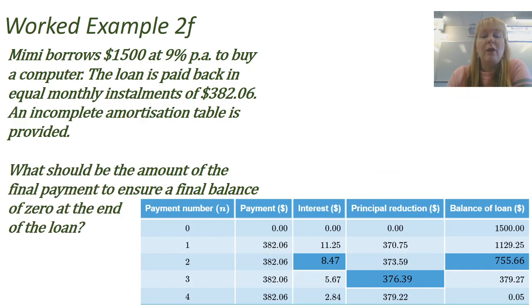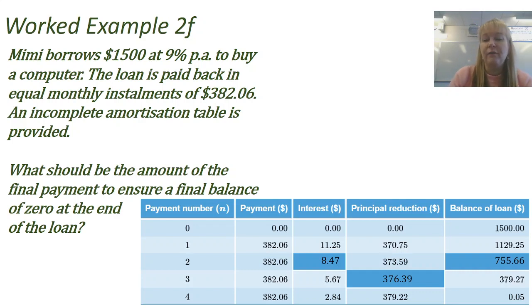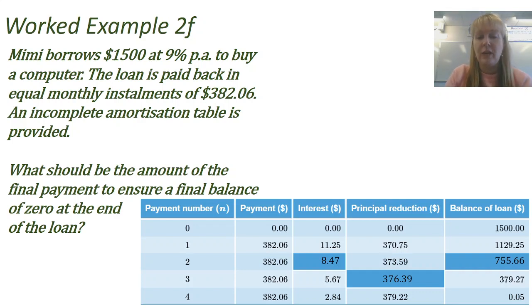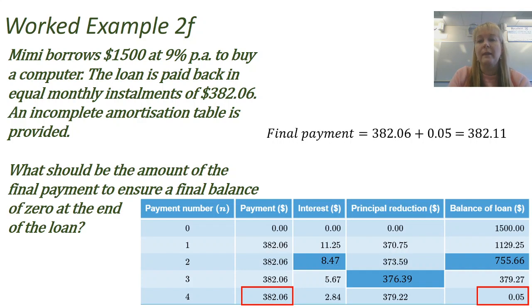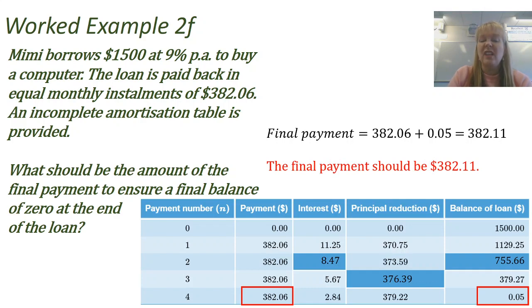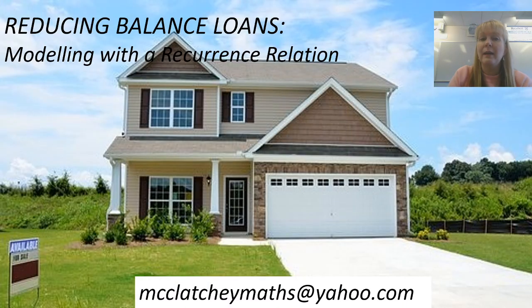Lastly, what should her final payment be to ensure she has a zero balance? At the end of the fourth payment she owes $0.05. Rather than letting the loan continue earning interest on that tiny amount, she adds those two numbers together: $382.06 + $0.05 = $382.11. So her final repayment will just be that little bit higher.